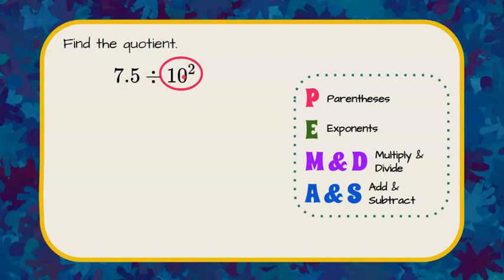When we have a power of 10, we have a base of 10 and an exponent of 2. That exponent of 2 means take your base of 10 and multiply it by itself two times. So 10 squared is the same as saying 10 times 10, and 10 times 10 is 100.